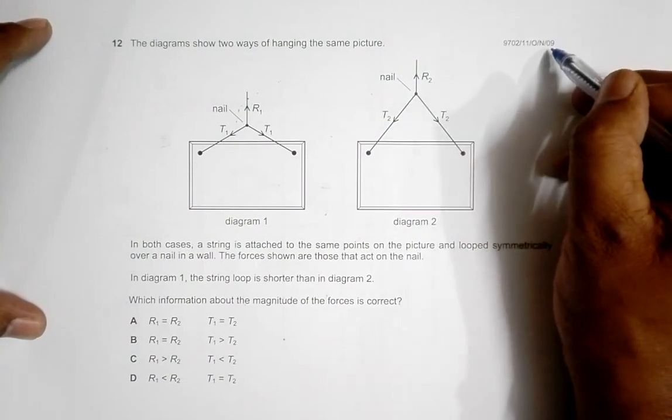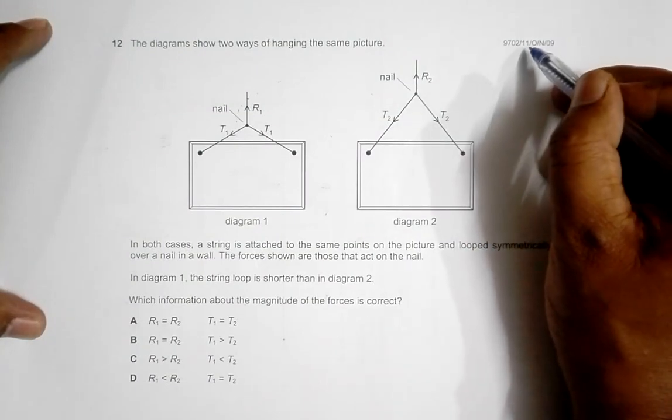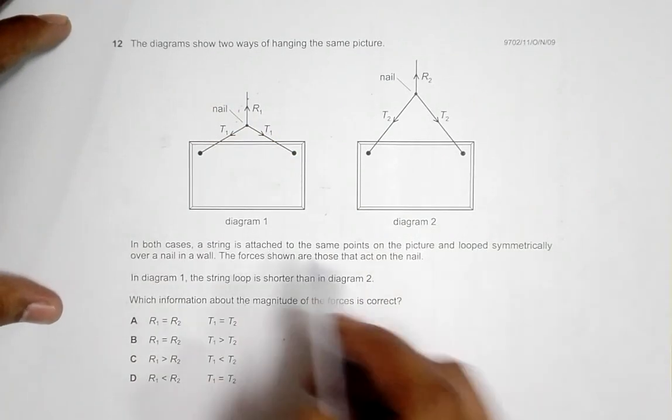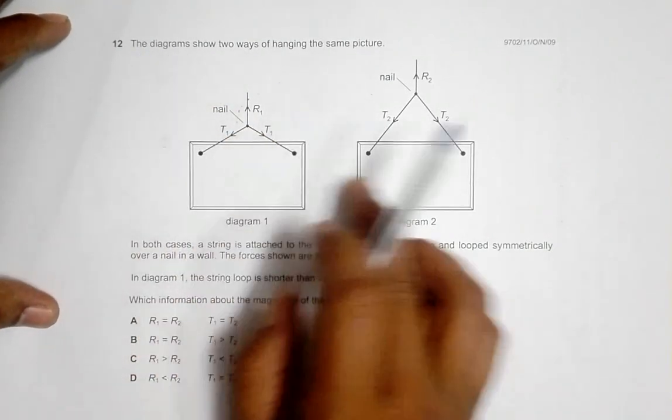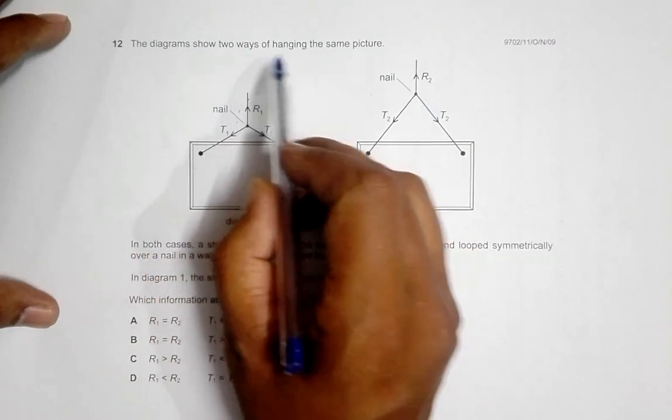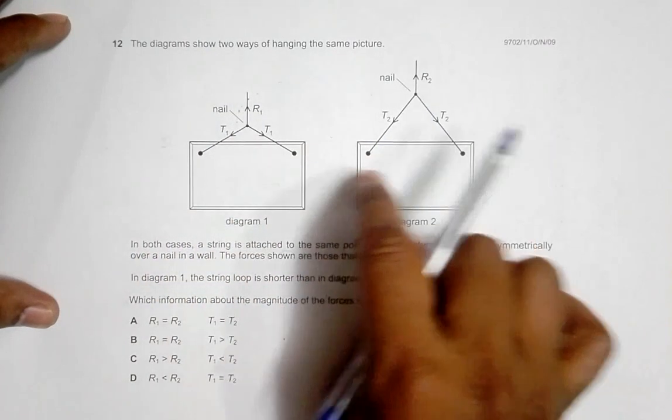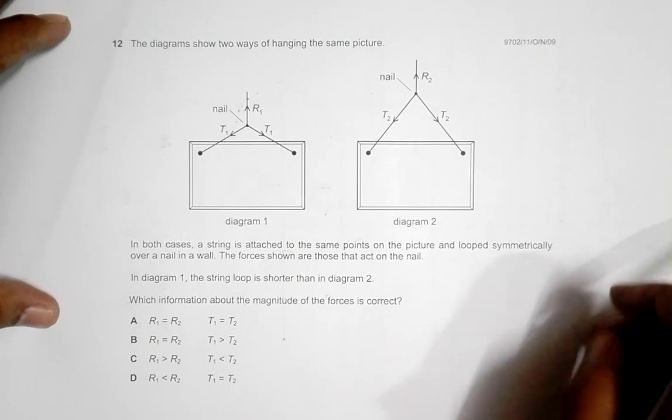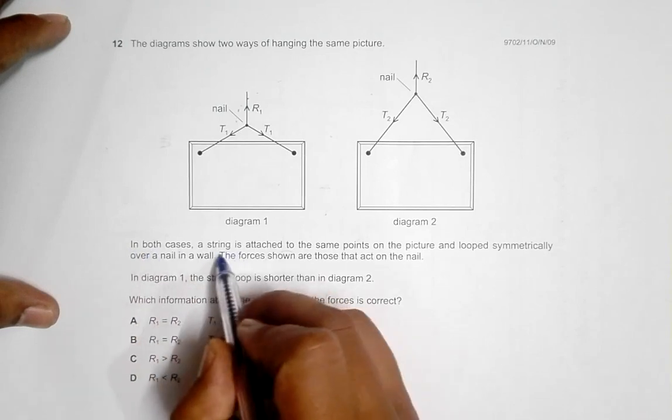Hello, this is the question from 2009 October November Paper 1, question number 12. The diagrams show two ways of hanging the same picture, meaning all their features are the same including mass, area, and volume. In both cases, a string is attached to the same points on the picture.